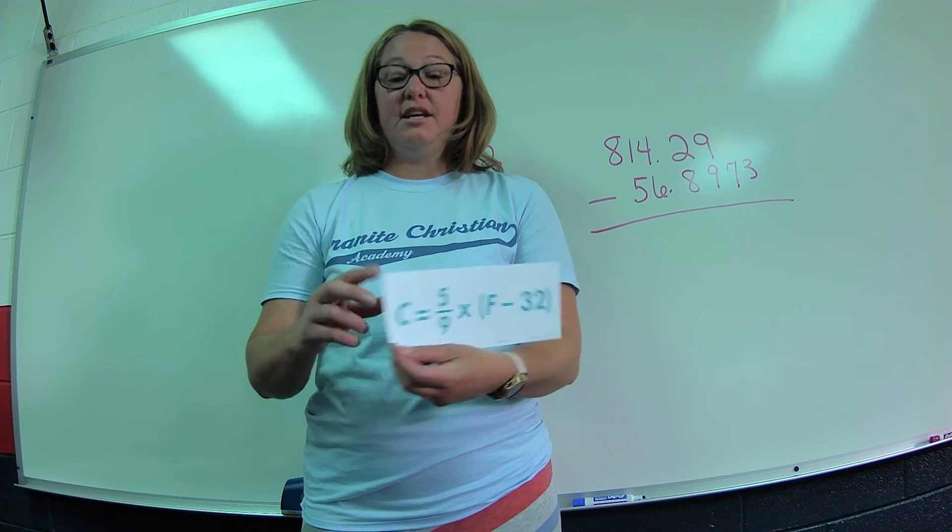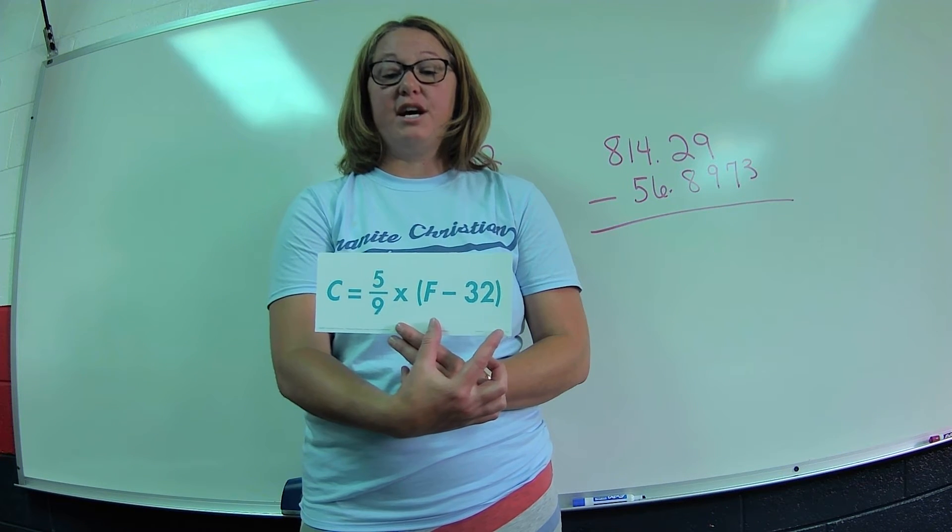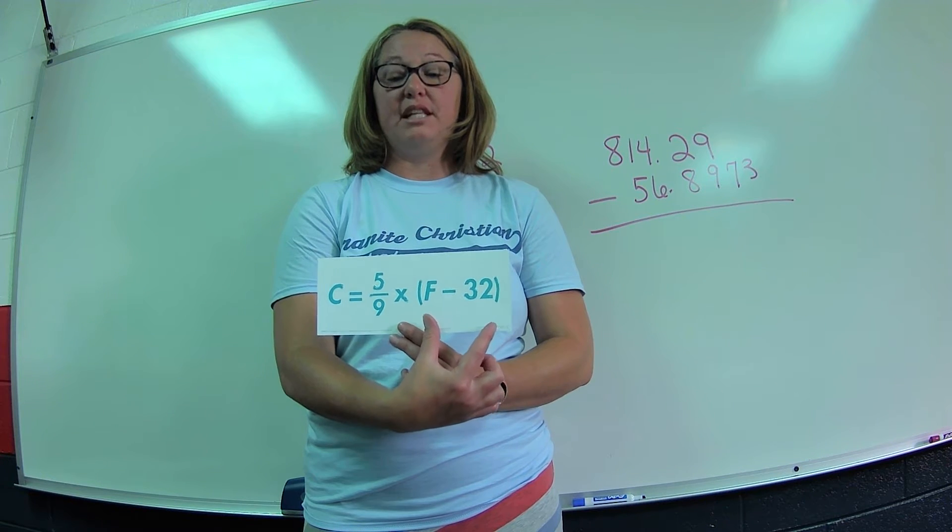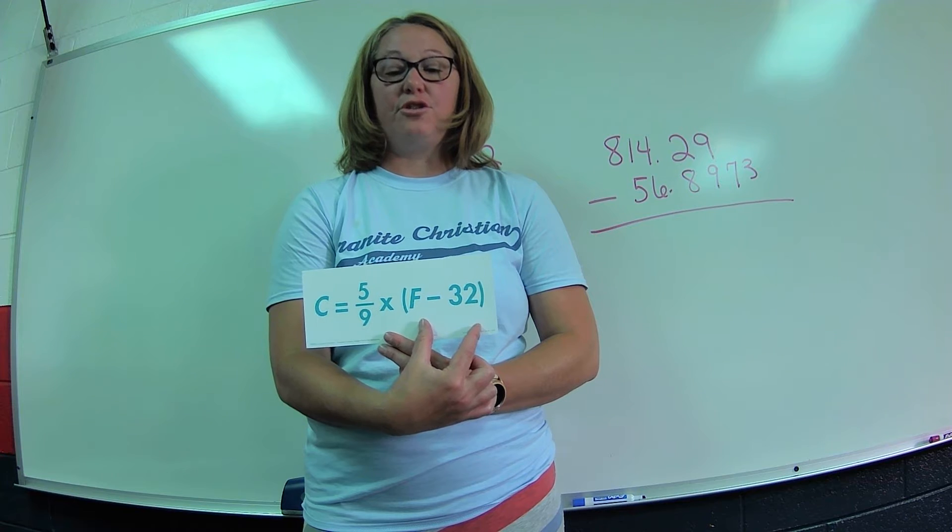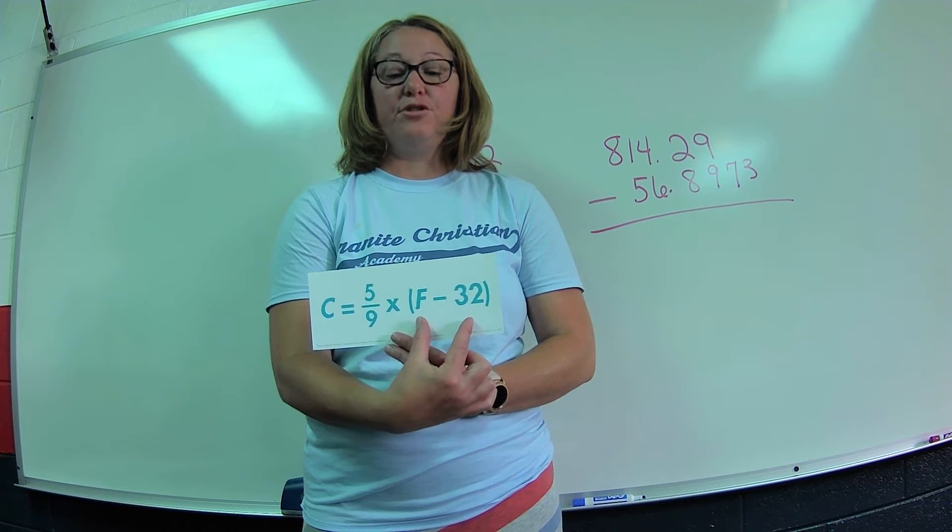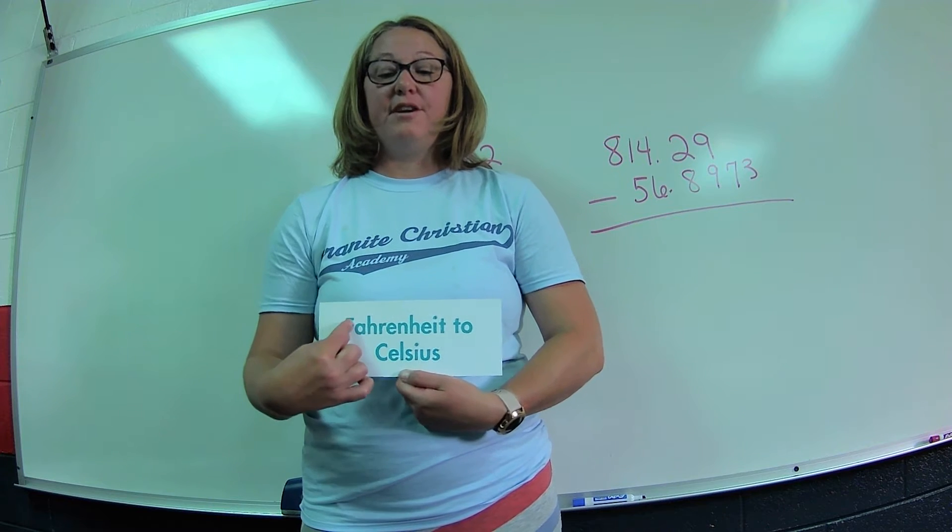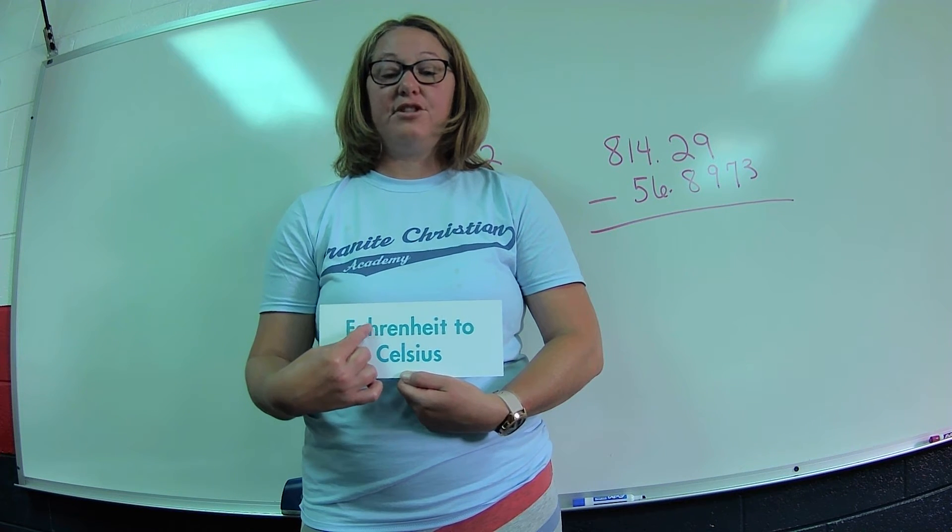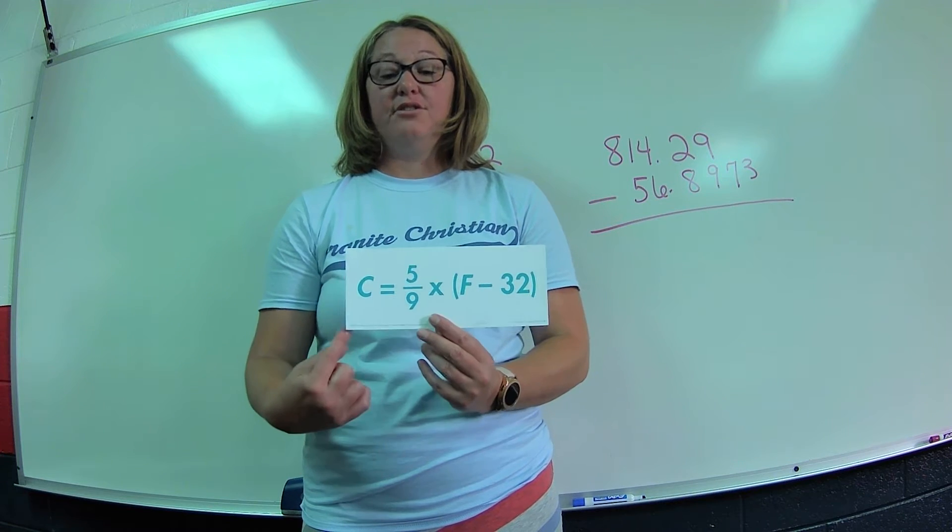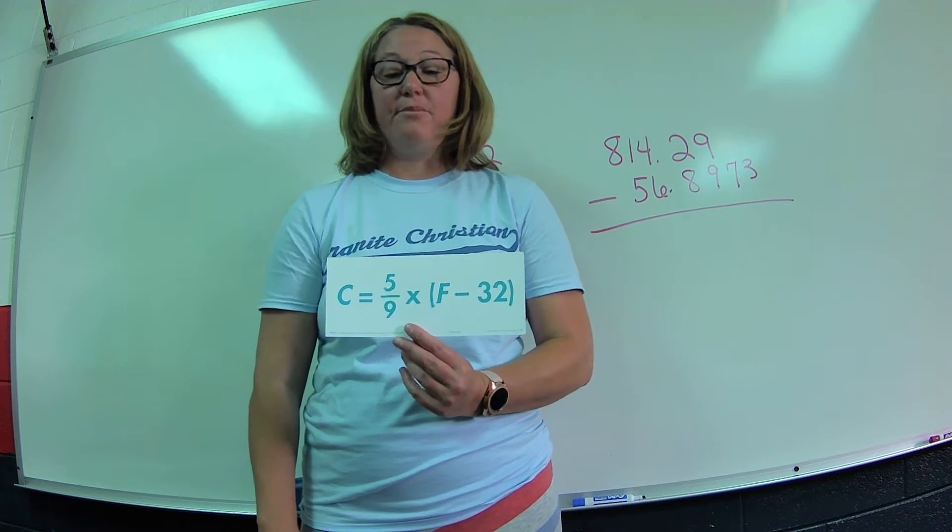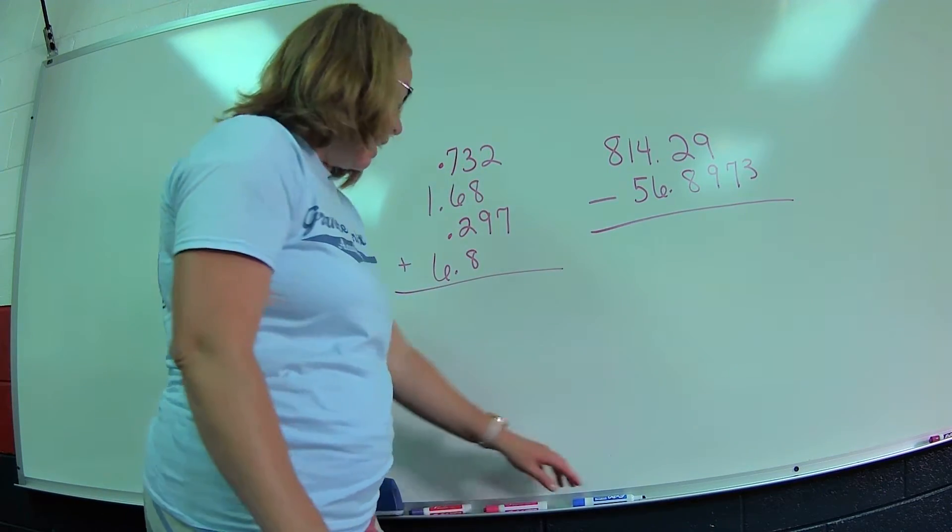When they give us the Fahrenheit value and we want to go to Celsius, it's five-ninths times parentheses Fahrenheit minus 32. Remember, we take the value of Fahrenheit, plug it in here, and then we subtract our 32. We do the parentheses first and then multiply it by five-ninths. So from Fahrenheit to Celsius: C equals five-ninths times F minus 32.